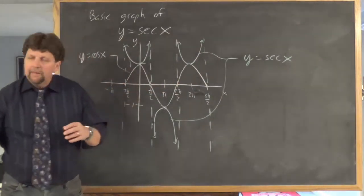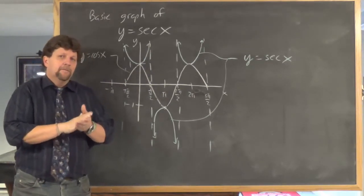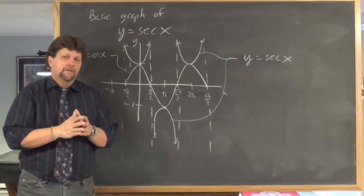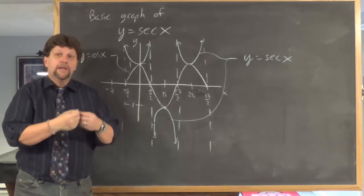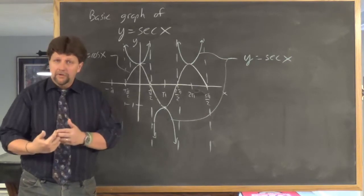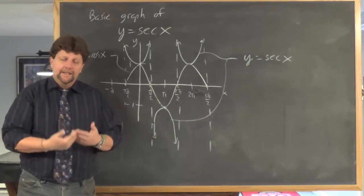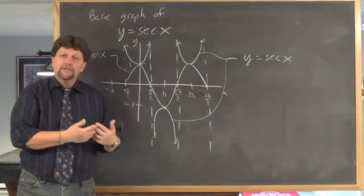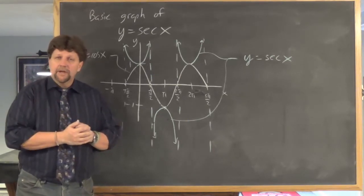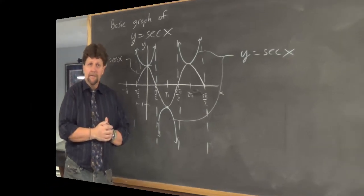To recap with cosecant and secant: whenever you're asked to graph a cosecant or secant function, the first thing you should do is graph sine or cosine and use that as a guide to get the graph of cosecant or secant. I'm going to do an example to show you what I mean by that.